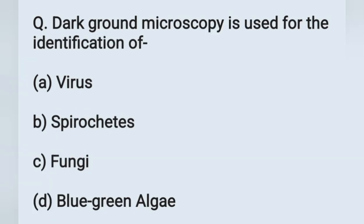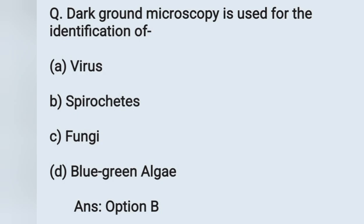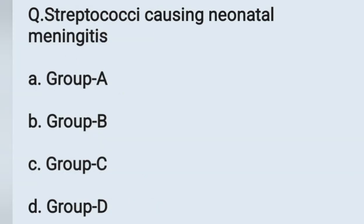The next question: Dark ground microscopy is used for the identification of — option A: virus, option B: spirochetes, option C: fungi, option D: blue-green algae. Dark ground microscopy is used for the identification of spirochetes. Option B is the correct answer.